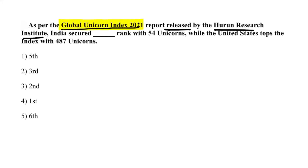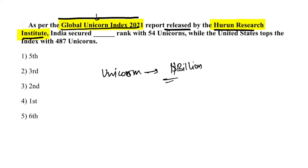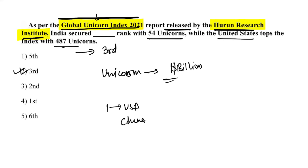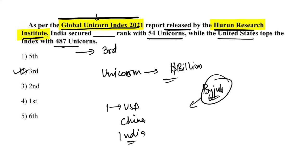As per the Global Unicorn Index of 2021 released by Hurun Research Institute, India ranked third with 54 unicorns. A unicorn is a startup that has crossed a market cap of one billion dollars. The USA topped with 487 unicorns, followed by China in second, and India in third. BYJU'S is the most valuable unicorn in India.